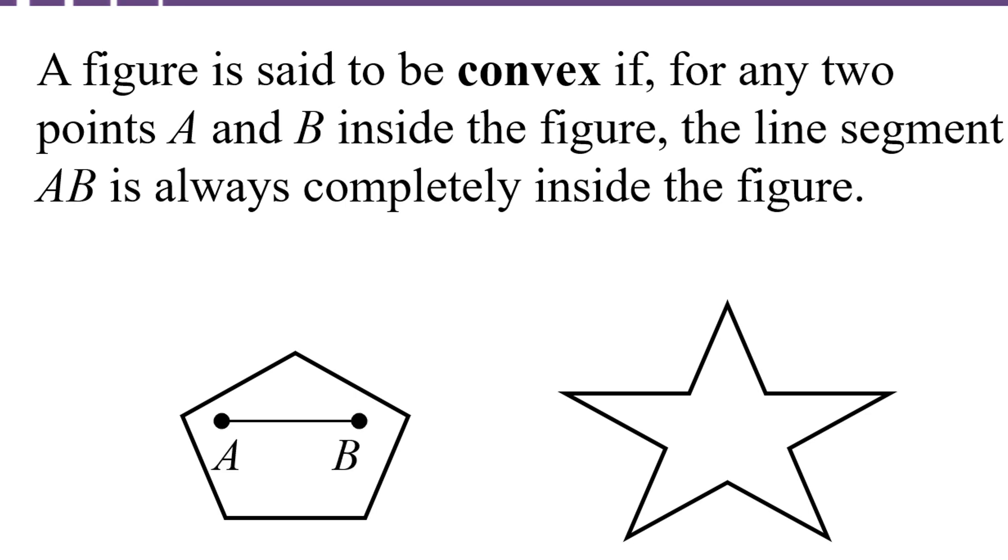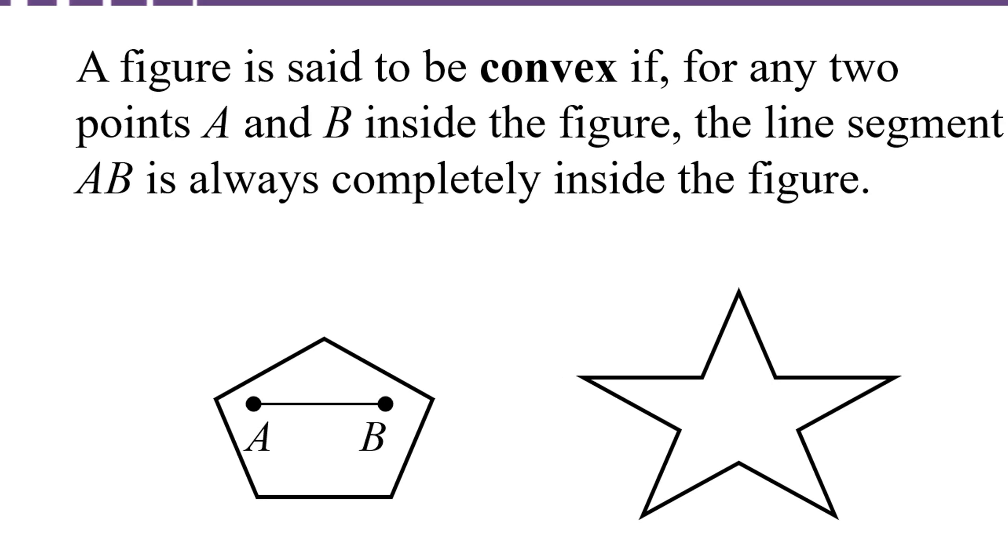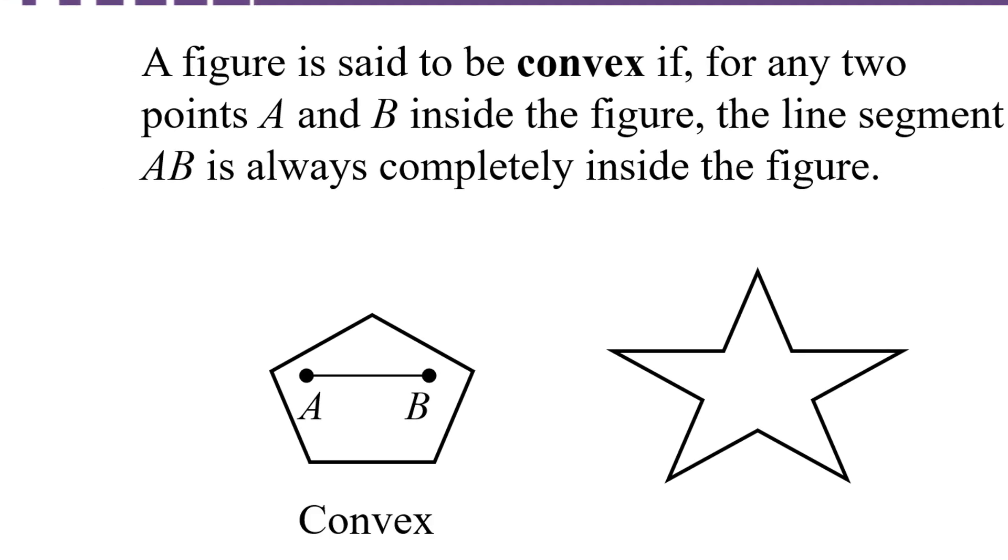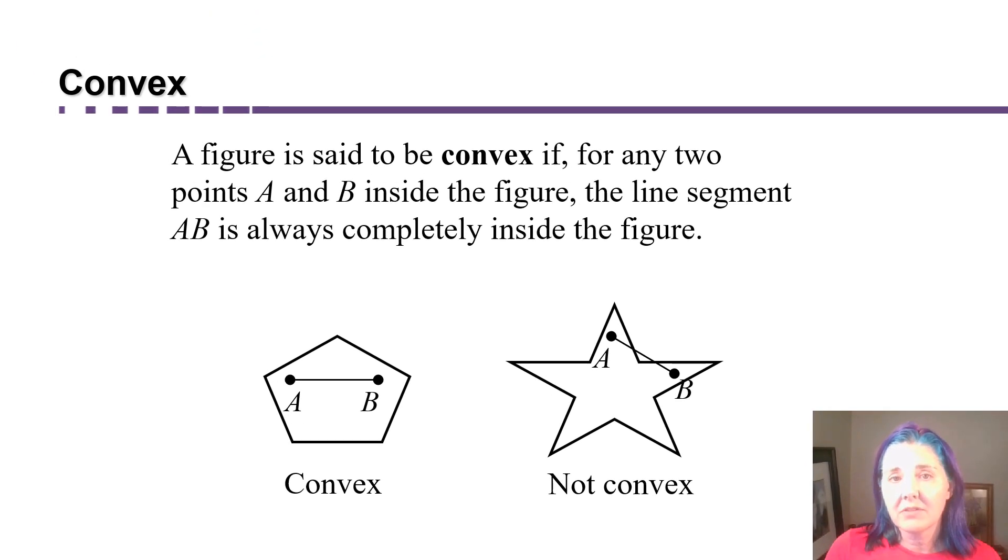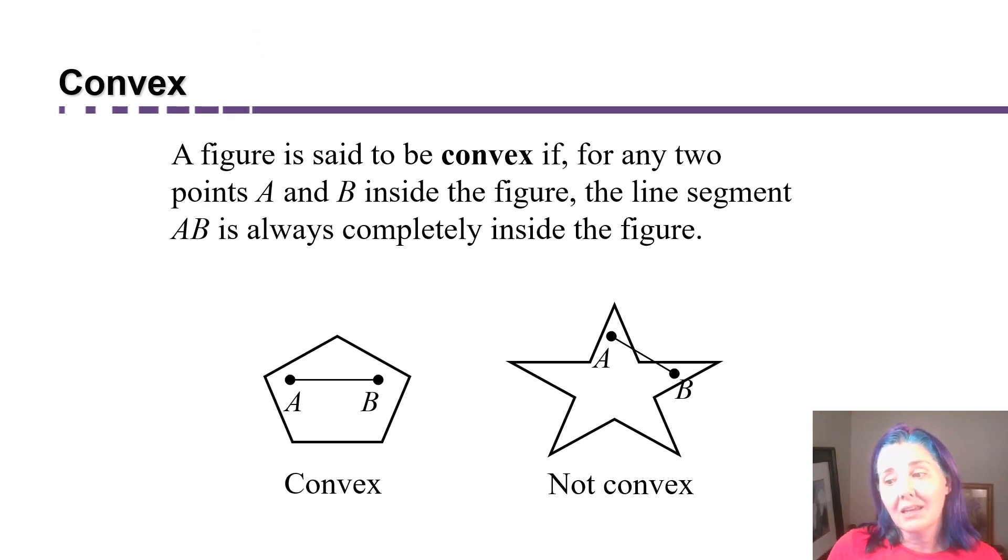For example, in the figure on the left, if I put any two points A and B and connect them with a line segment, that line segment is completely contained in the diagram. So, that one's convex. On the other hand, the figure on the right, which looks like a star, I can find two points A and B, such that if I connect them, the line segment that joins them is not completely contained. It sticks out. So, this is not convex. Sometimes not convex is referred to as concave. You can see that this has a dent in it.